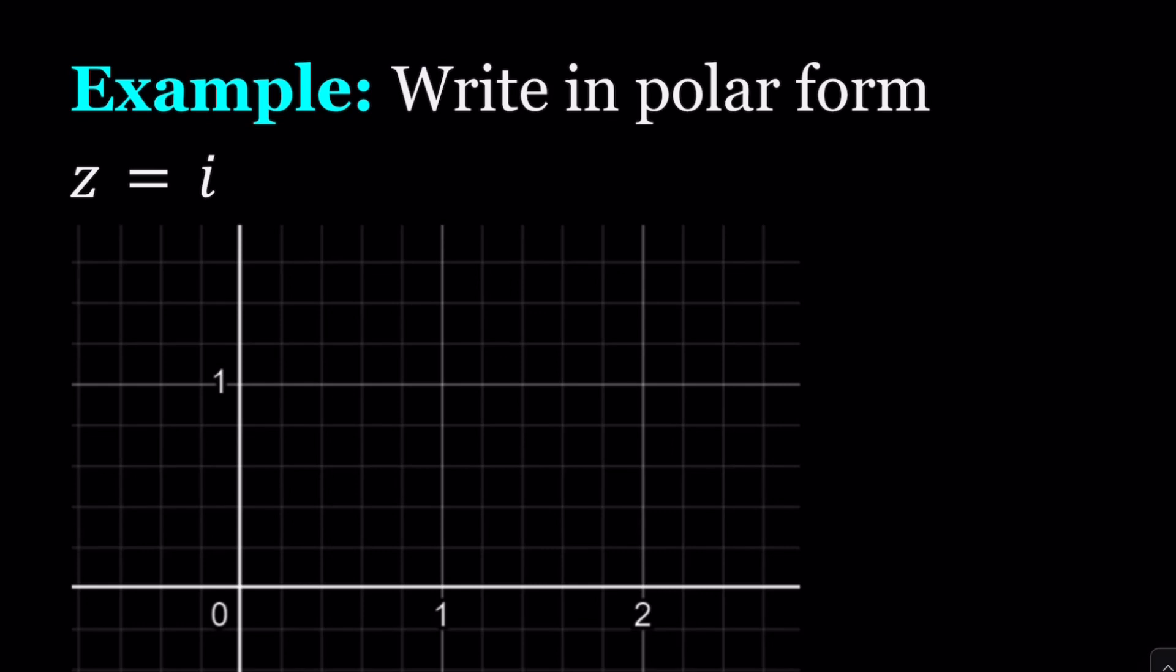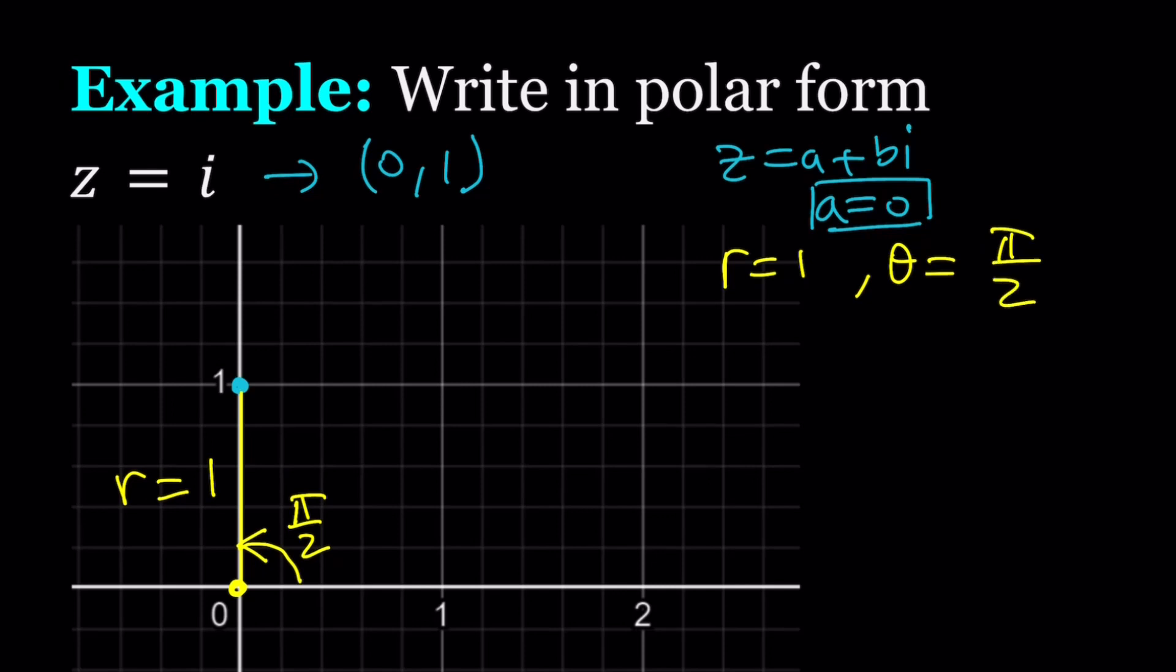Let's take a look at another example. Let's write Z equals I. So I is a pure imaginary number. It has no real part or real part is 0. So when I write a number A plus BI, I'm talking about A being 0 in this case. So we're looking at 0, 1 as an ordered pair, which happens to be right here. So I'm going to connect it to the origin, which is basically staying on the y-axis. The distance between 0, 0 and 0, 1 happens to be 1. So R equals 1 in this case. What about theta? It's the angle between the x-axis and this segment. So that would be pi over 2, which is the same thing as 90 degrees.